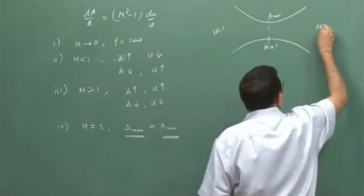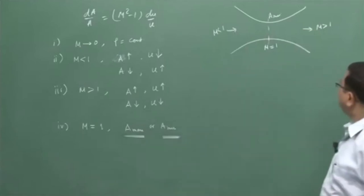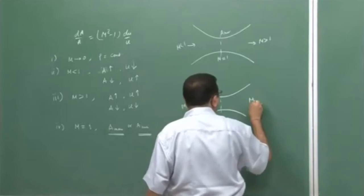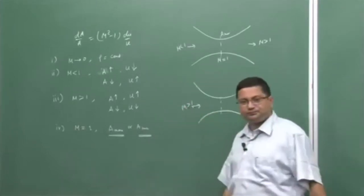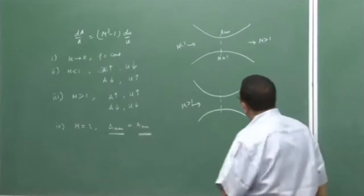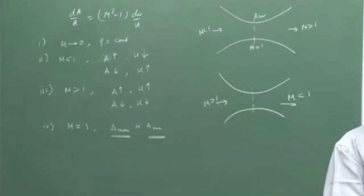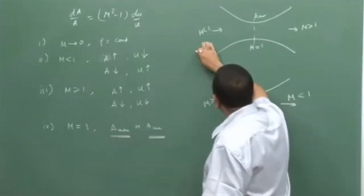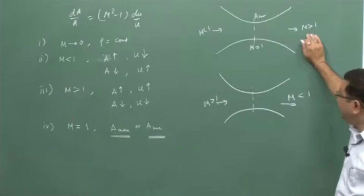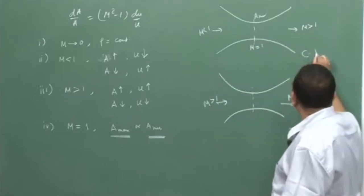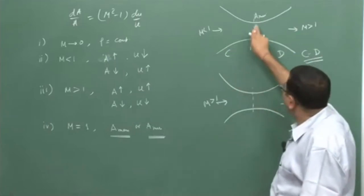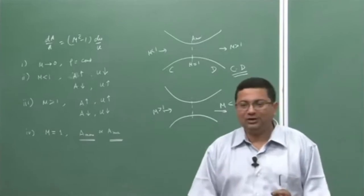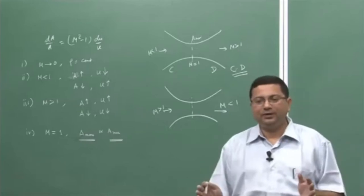We have shown this in the last class. We also showed that for taking a subsonic flow and converting it to a supersonic flow, we need to have a converging-diverging area with the minimum area at the throat where Mach number is equal to 1. Similarly, if you have a supersonic flow and want to slow it down to a subsonic flow, then we also need to go through a converging-diverging area.